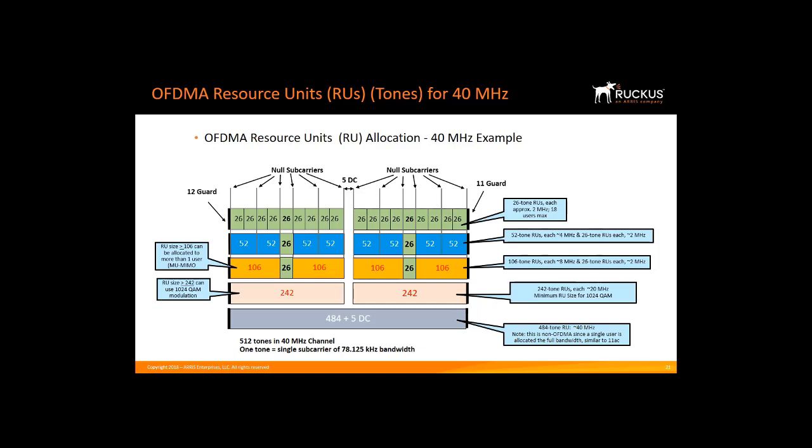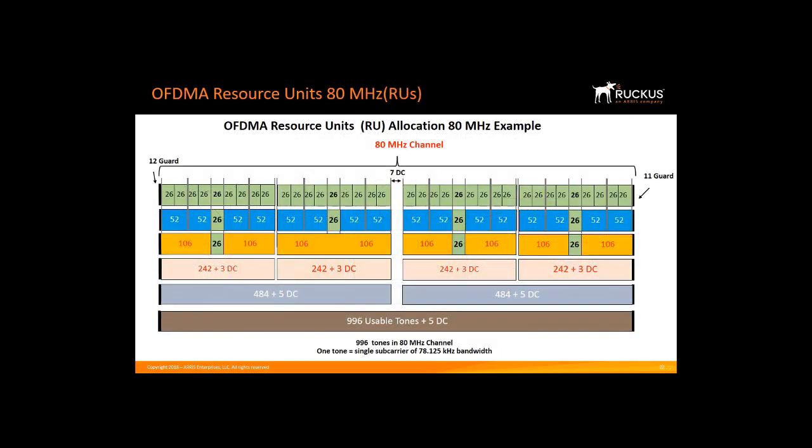As you can see, OFDMA enables efficient use of available spectrum, especially for low-bandwidth applications. Here we see the number of resource units or data tones available in an 80 MHz channel — we have up to 996 usable tones. This bandwidth can be used in dense user environments where many users would normally contend inefficiently for their turn to use the channel. This OFDMA mechanism now serves them simultaneously.